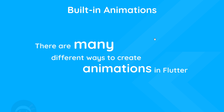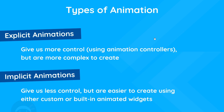Broadly speaking, there are two different types of animations in Flutter. We have explicit animations, which give us more control over the animation using an animation controller, but they're generally a bit more complex to set up. We also have implicit animations, which give us less control but are typically easier to set up using built-in or custom animated widgets.